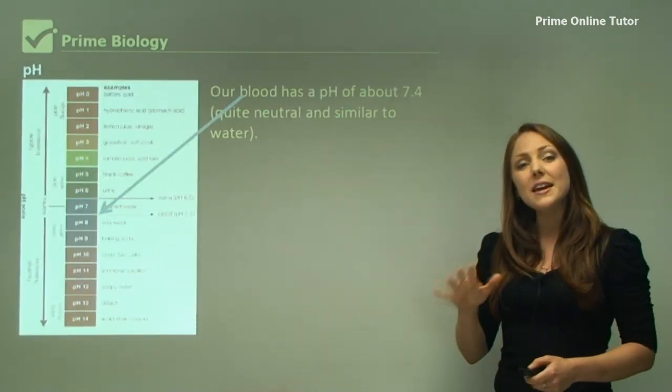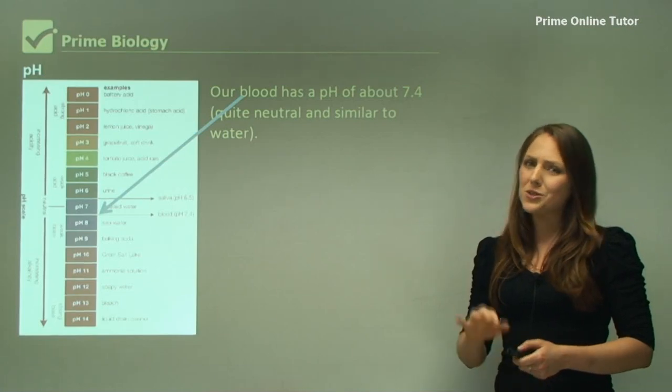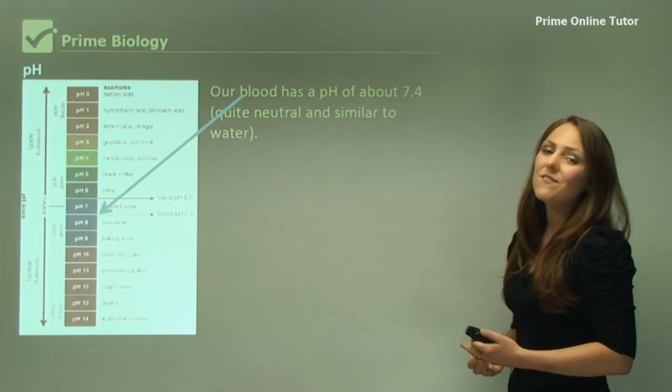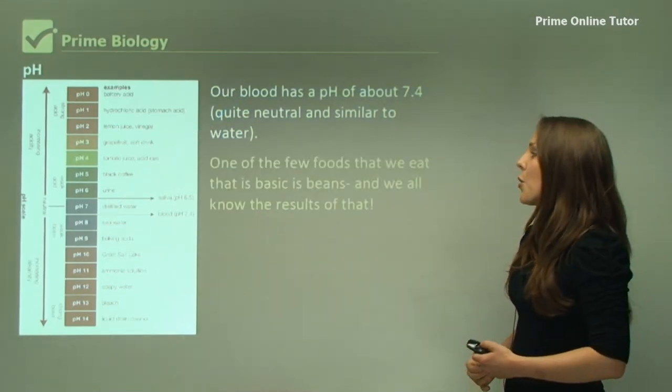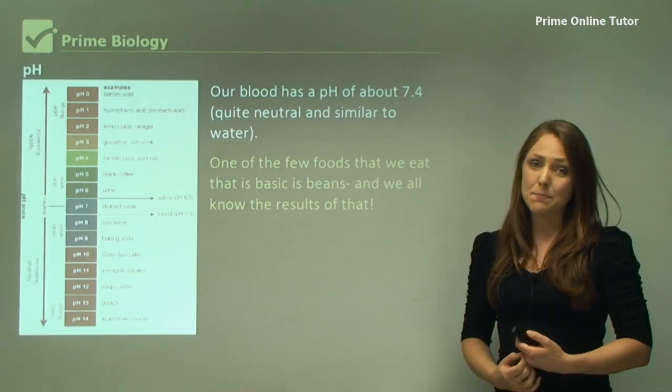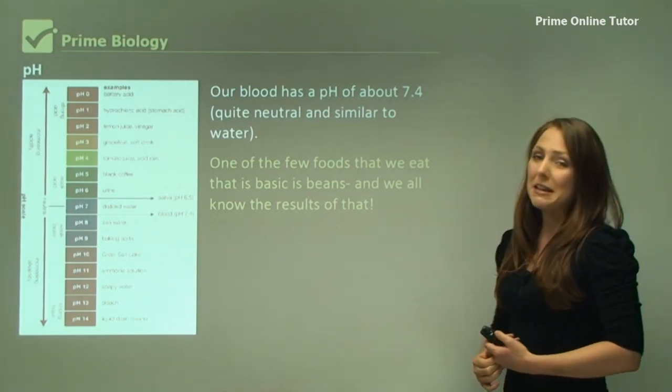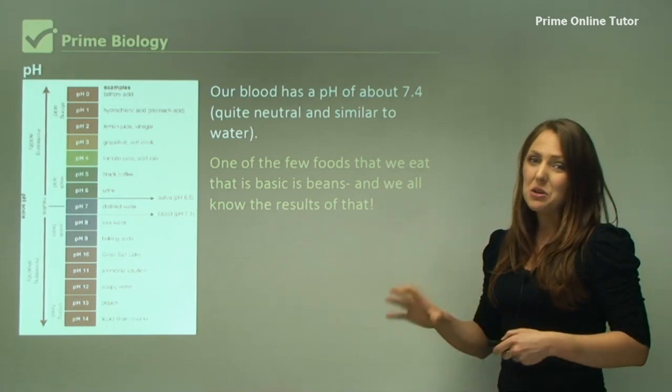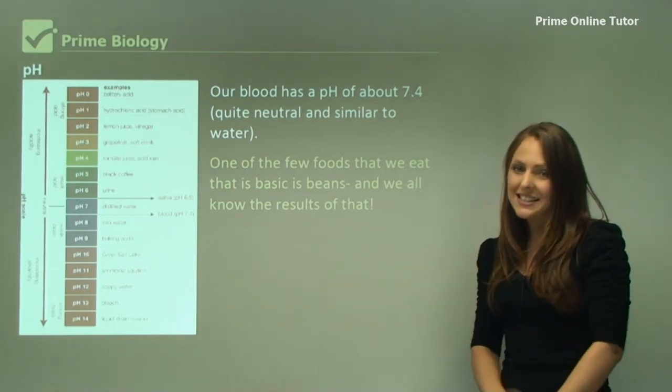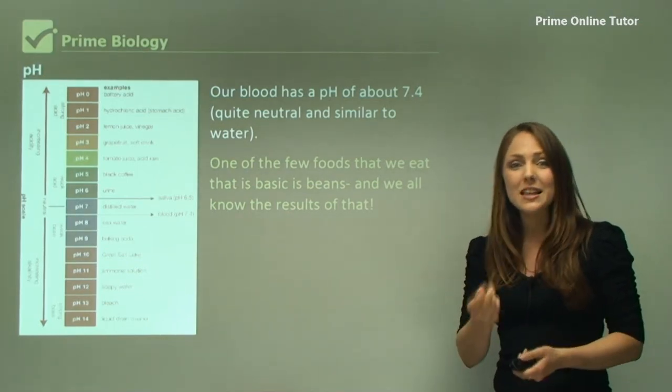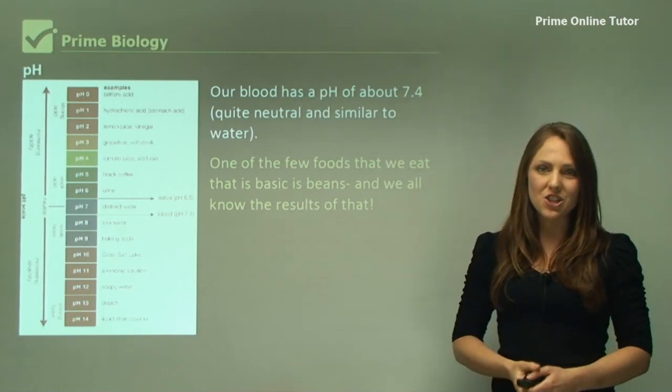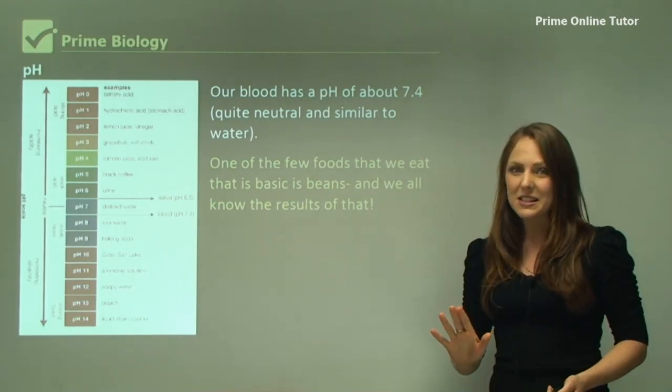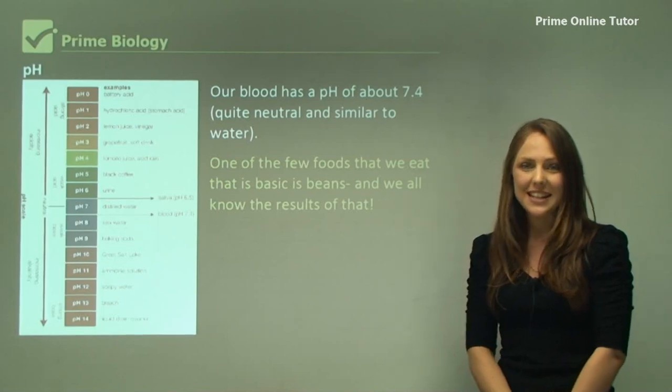Our blood has a pH of 7.4, so that's quite neutral and very similar to water. One of the few foods that we eat that is basic is baked beans, and we all know the results of that. You may produce a little bit more gas and that's because of the effects that a basic food has on our digestive system. It doesn't mean that it's bad for us - it's still healthy to eat.